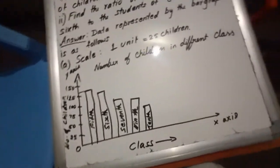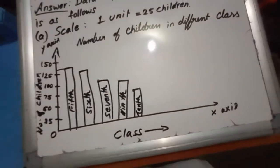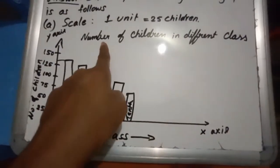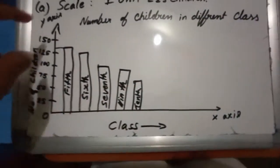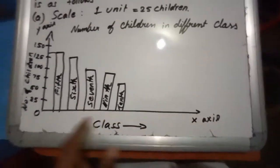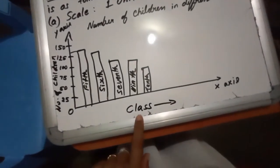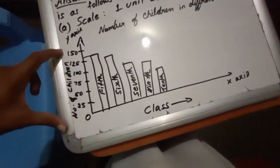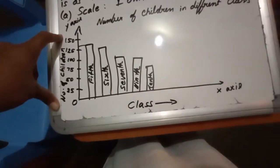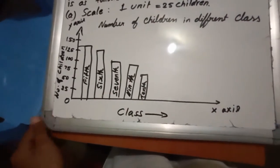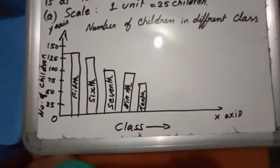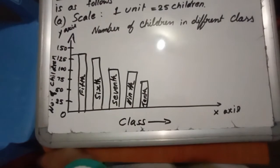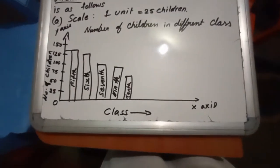So now the representing the graph is ready. To draw the graph the main thing is title must be there: number of children in different class. Then x-axis, y-axis. x-axis I have chosen as class, y-axis I have chosen number of children. Here while choosing you have to represent this complete bar graph. So now I have drawn the bar graph.